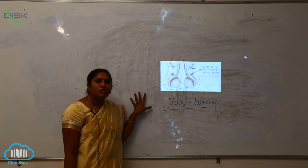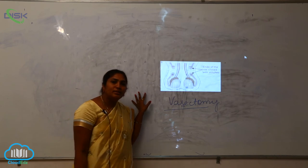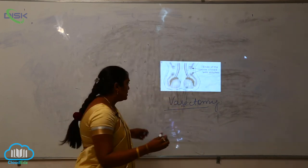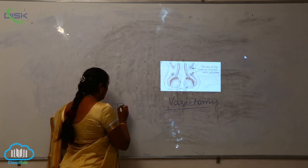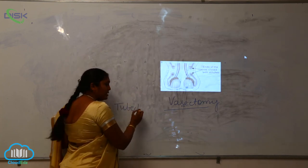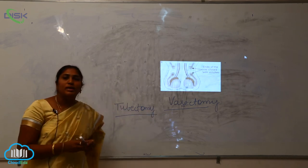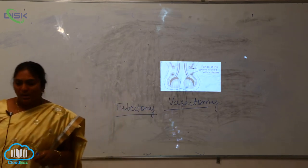When you go to the other technology to control the birth rate, that is called tubectomy. Tubectomy is the procedure which is followed in females.